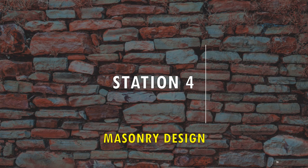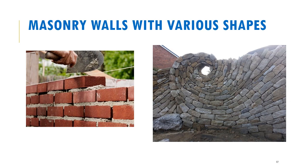Station 4 is where I'll be discussing design principles when it comes to masonry. Masonry walls can come in various shapes, but when it comes to their design, we have to make sure that they satisfy standard requirements. In Australia, the specific standard we look at for masonry structures is AS3700. The standards are used for the design of masonry structures in order to achieve a durable structure and to achieve a structure that can resist the ultimate strengths that will be imposed on it.